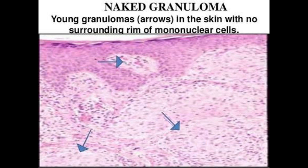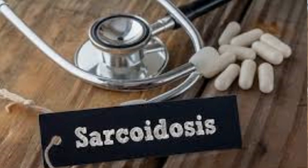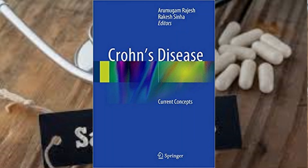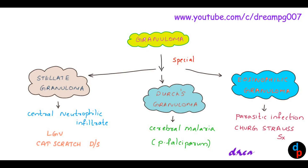Another important point to remember is naked granuloma. Naked granuloma is a type of granuloma in which the outer lymphocyte layer is absent — that is why it is called naked granuloma. Naked granuloma is seen in sarcoidosis and Crohn's disease.